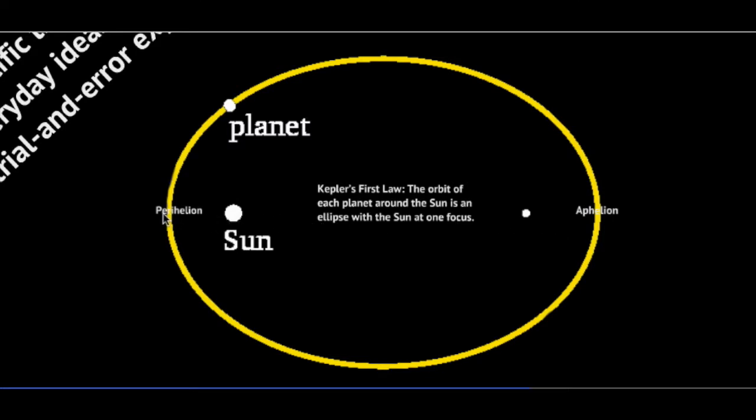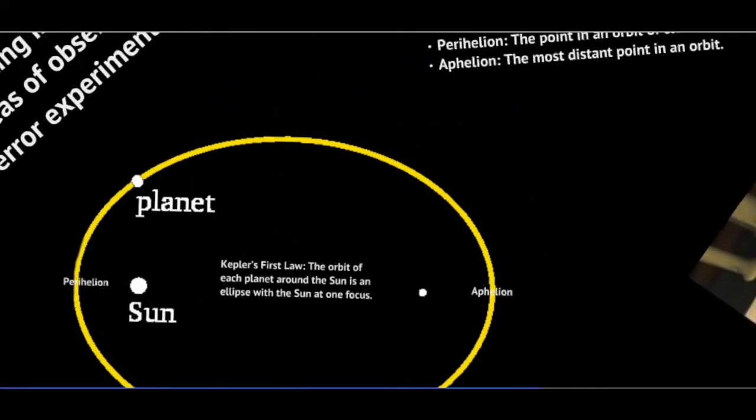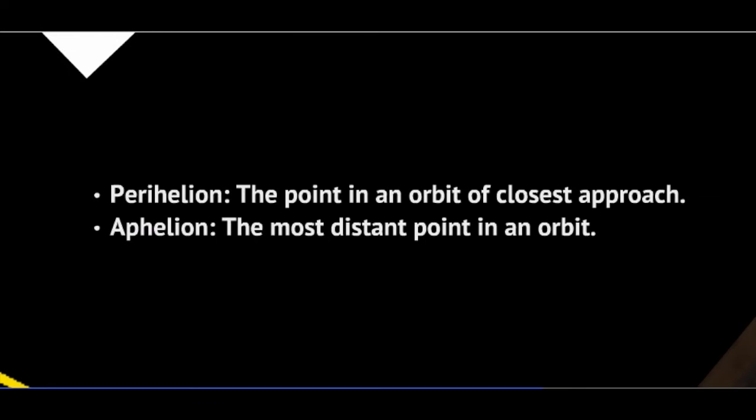You'll notice that sometimes the planet is closer to the sun and sometimes the planet is further away from the sun. The point closest to the sun we call perihelion, or from the Greek, close to the sun, or aphelion for the most distant point in an orbit.